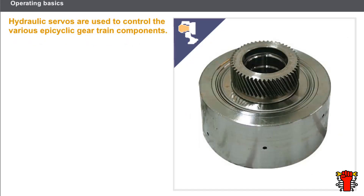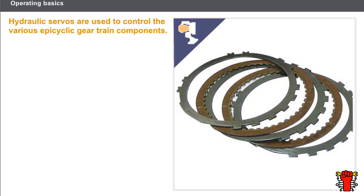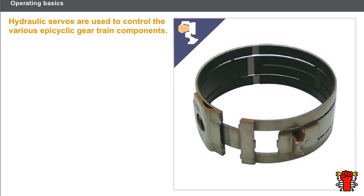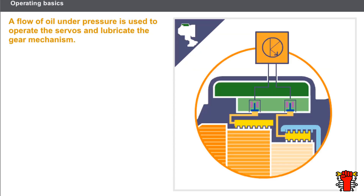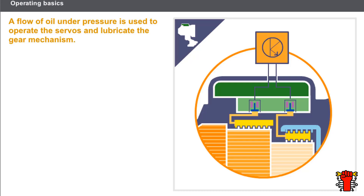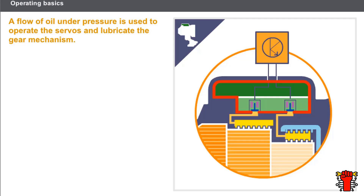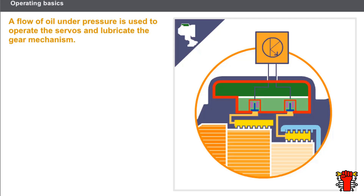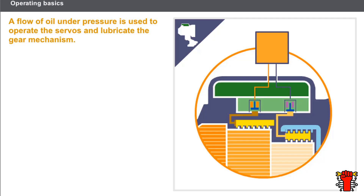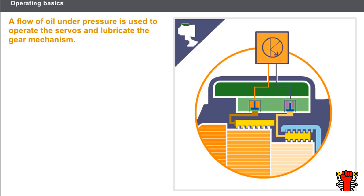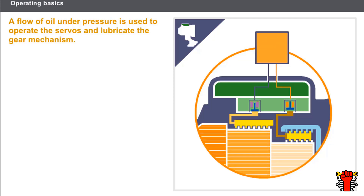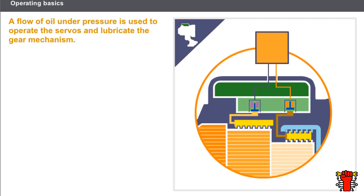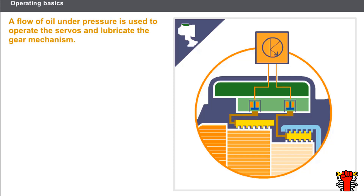Clutch and brake units called hydraulic servos are used to control the various epicyclic gear train components. These are of the oil bath multi-plate type. Band brake technology is used for certain gearbox types, offering the advantage of accepting higher torque with less drag. A flow of oil under pressure — called line pressure — operates the servos and lubricates the gear mechanism. The hydraulic distributor controls line pressure to the servos via valves and solenoid valves. Applying oil pressure to a brake prevents a gear wheel from rotating by connecting it to the gearbox casing, making it a reaction component. Applying oil pressure to a clutch causes a gear wheel to rotate by connecting it to the turbine shaft, making it a driving component. One or more servos may be activated depending on the ratio required.